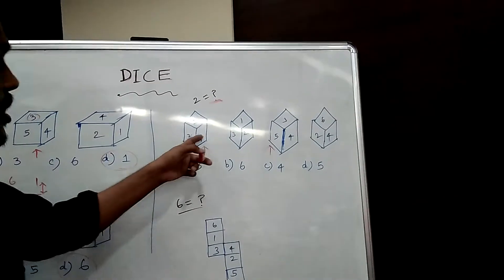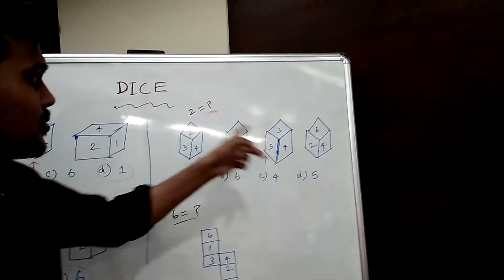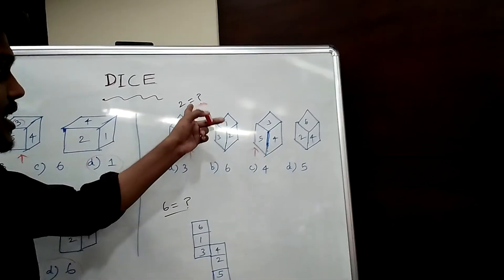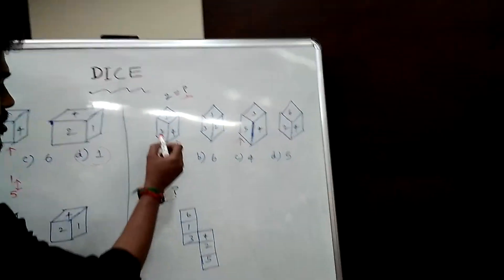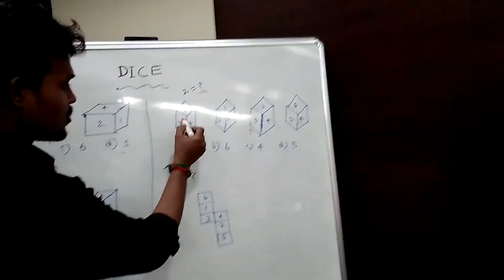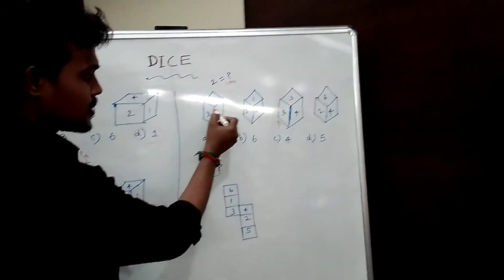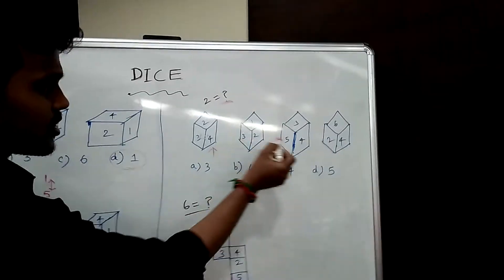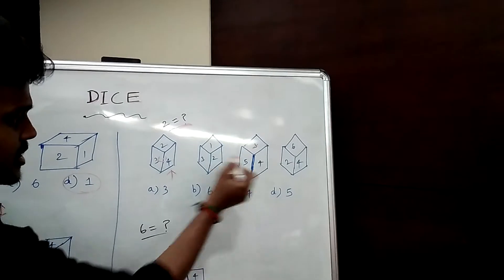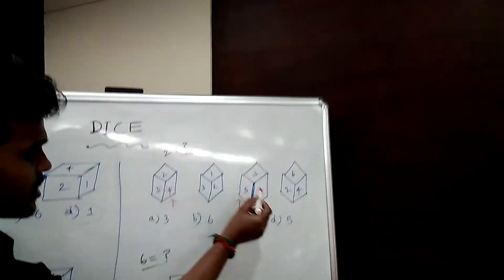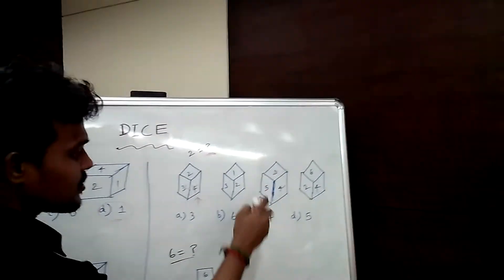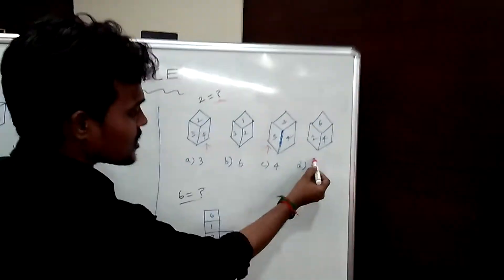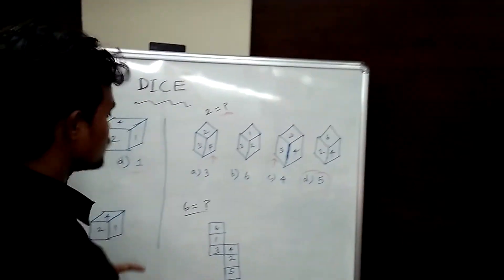Case 2: so 3 and 4 — okay. So 3 and 4 common, 3 and 4 common, 2 opposite 5. Then 4 and 4 — so 2 opposite.